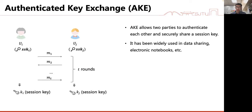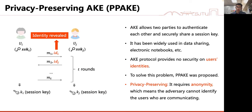We recall authenticated key exchange first. AKE allows two parties to authenticate each other and securely share a session key. It has been widely used in data sharing and electronic networks. In some cases, the interacting parties may want their identities kept secret from others. However, their transcripts sent in the channel may contain information about their identities.